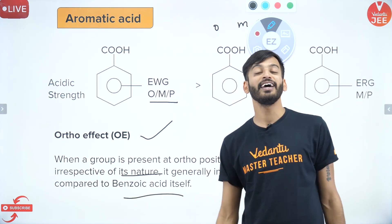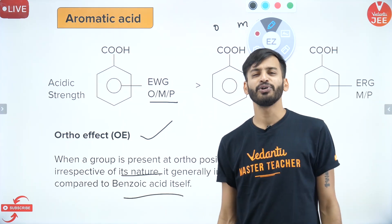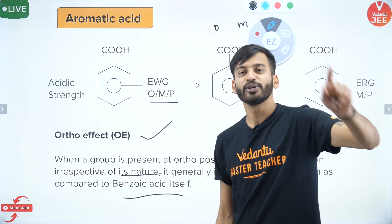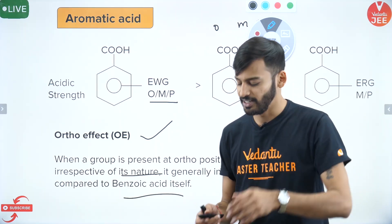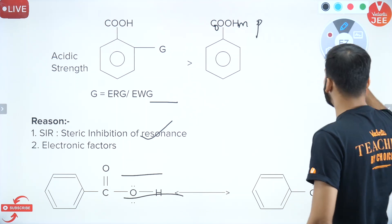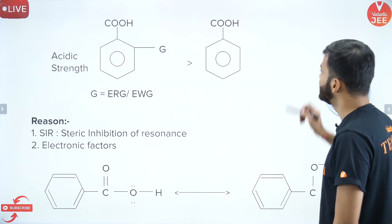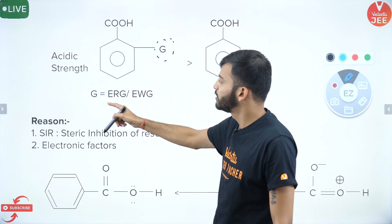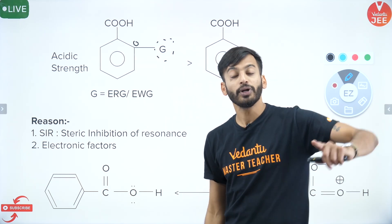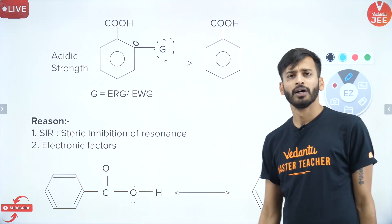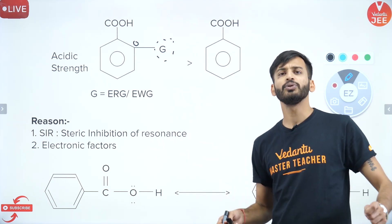If you have a group at the ortho position of benzoic acid, irrespective of its nature, it is going to increase the acidic strength of the benzoic acid. Now why is this happening? If a group is attached — whether electron releasing or electron withdrawing — at ortho position, it will be more acidic than benzoic acid itself. There are two reasons: steric inhibition to resonance, and electronic factors.